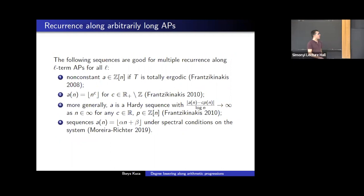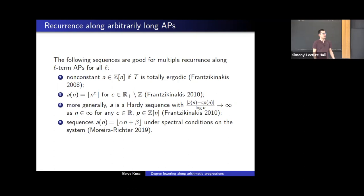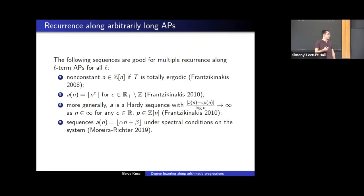Let me briefly recall some history of this result. For many families of sequences, we know they're good for multiple recurrence along arithmetic progressions. For instance, if we take an integral polynomial, it was shown by Nikos many years ago that these sequences are good for multiple recurrence along L-term APs for totally ergodic systems. Nikos also proved a similar result for fractional powers of n, except there we don't need the assumption of total ergodicity. More generally, this holds for all Hardy sequences which differ enough from integral polynomials.